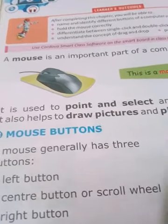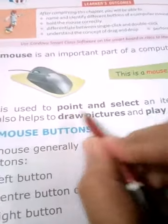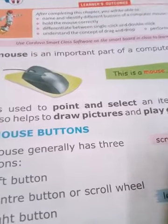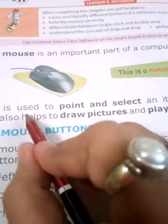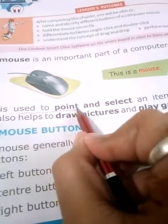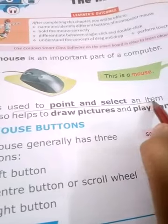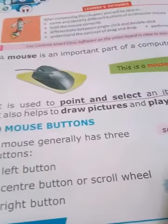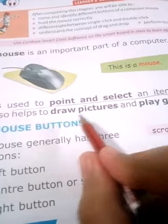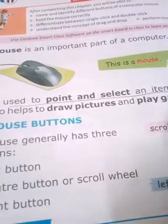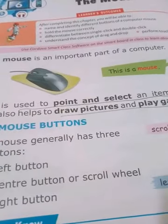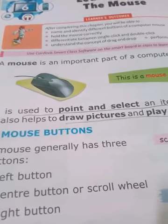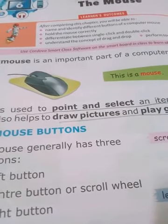You can underline this line: 'Mouse is used to point and select an item on the monitor.' It is also used to draw pictures and play games. So these are the two main functions of the mouse — pointing and selecting items, and also drawing pictures and playing games.